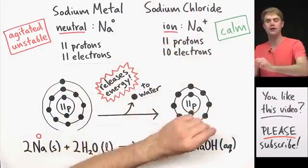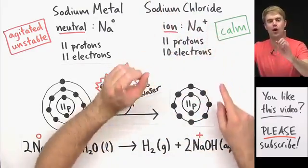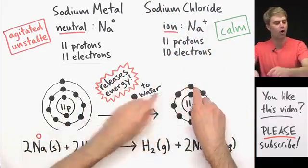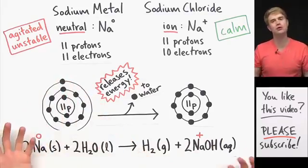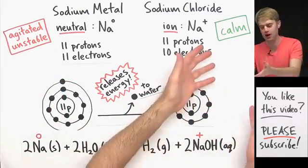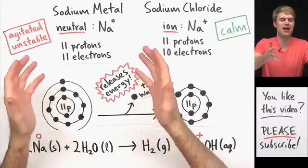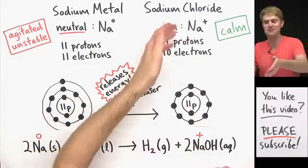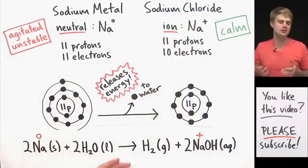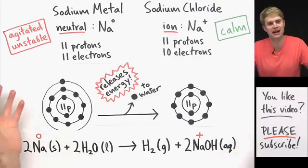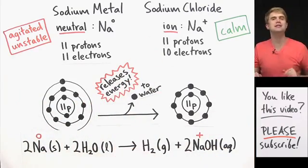Sodium chloride, on the other hand, is made of these sodium one plus ions that have already lost this outer electron, so they're super calm, they're not agitated, they're super stable. And instead of reacting violently with water, sodium one plus ions just kind of float around and hang out in water. They make a delicious seasoning.